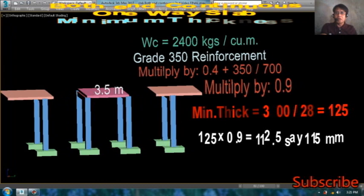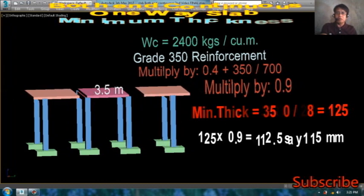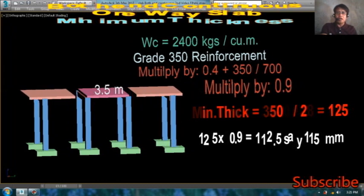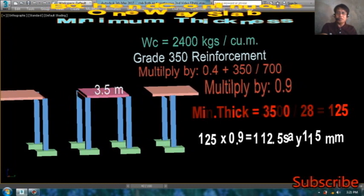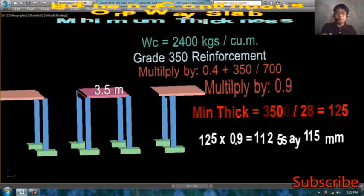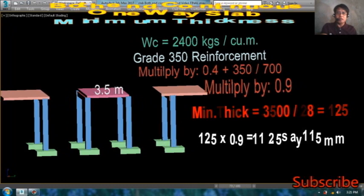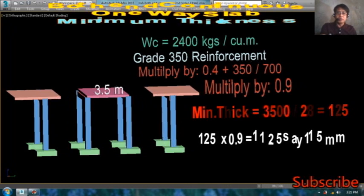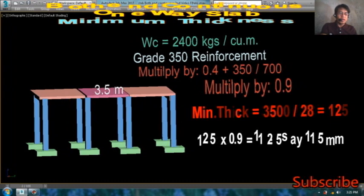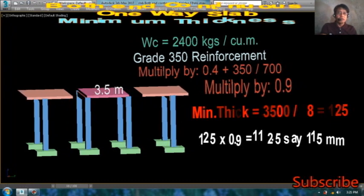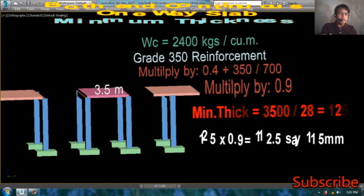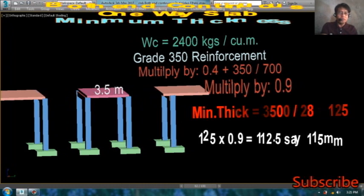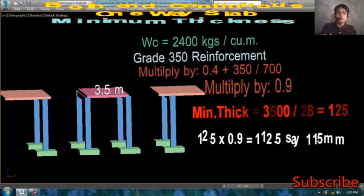Yung length po natin ng both end continue sa one-way slab, ang length po niya is 3,500 millimeter. Yung minimum thickness po niya is equal to 3,500 millimeter divided by 28 po. Ididivide lang po pala yung length ng 28. Ang answer po dun sa 3,500 divided by 28 po, ang answer po dun is 125 millimeter.